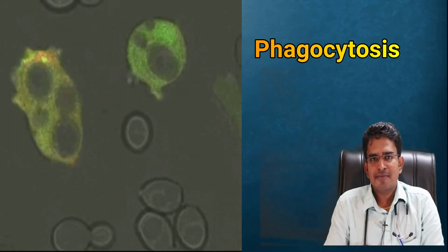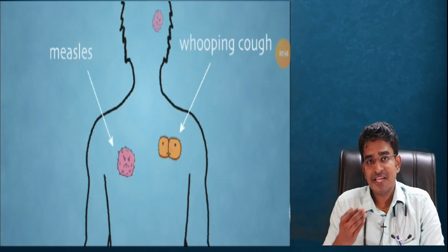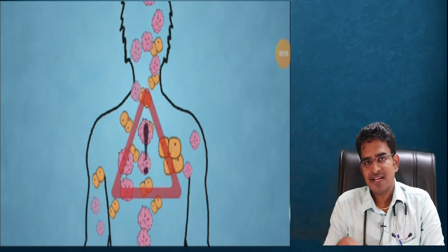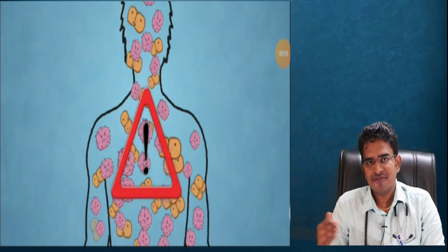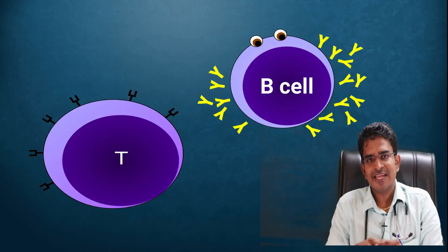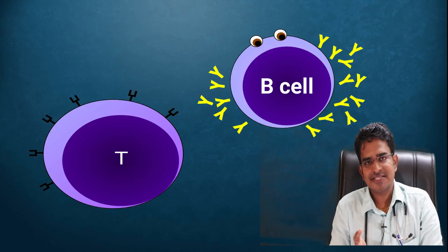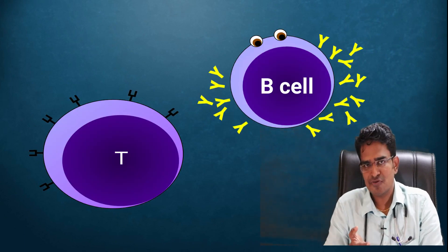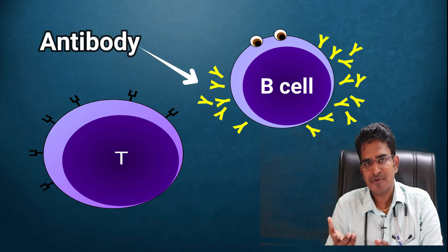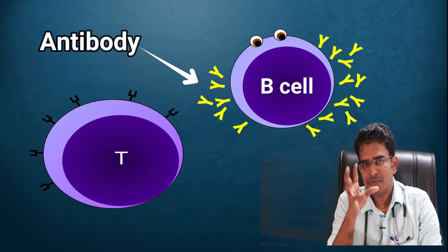If there is a virus, it will be handled by innate immunity first. However, innate immunity acts as a general defense. The adaptive immunity is like a special force — it involves T-cells and B-cells. The B-cells will produce antibodies, which are very powerful against the virus.